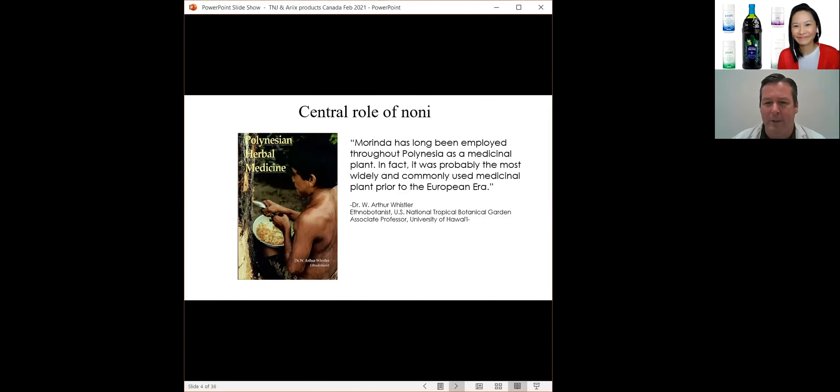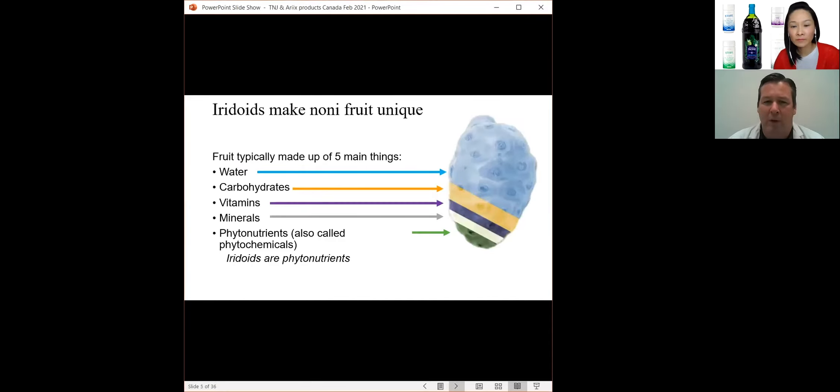A little more on iridoids here and phytonutrients. Iridoids are what make the Noni fruit unique. So in fruits, there are kind of five main things. Water is the major component. That's how you can make a juice from a fruit. There are carbohydrates in there. Those are sugars and fiber.